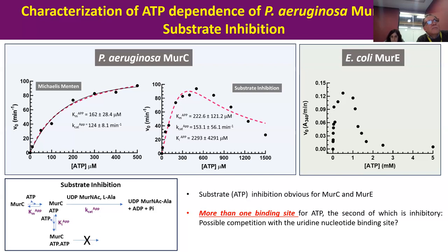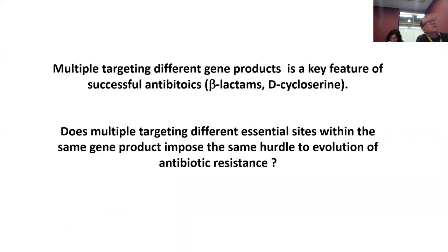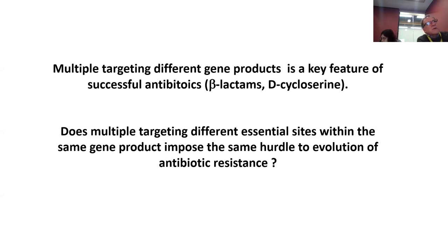Substrate inhibition occurs because you form a complex of the ligase with not just one molecule of ATP but two. Given that these proteins bind two nucleotides — one UTP-based and one adenosine-based — there is the possibility that ATP would actually bind to both subsites in the active site if its concentration is high enough. This is the origin of substrate inhibition. Working with that, me and Henry asked: we've been really interested in multi-targeting based on targeting different gene products — like beta-lactams and D-cycloserine targeting numerous PBPs or DDL or alanine racemase.